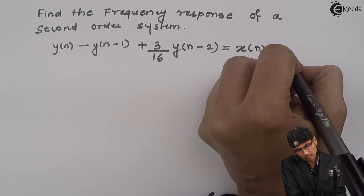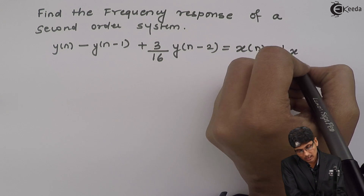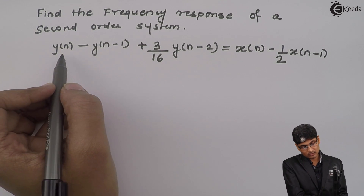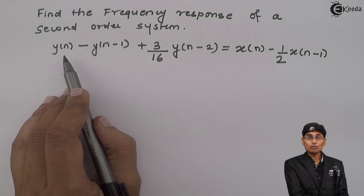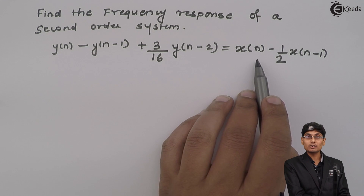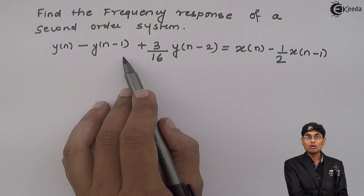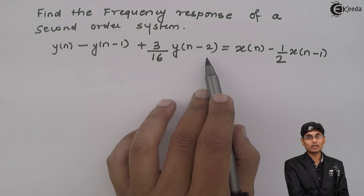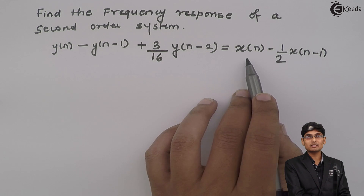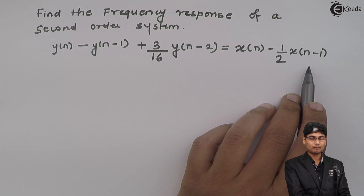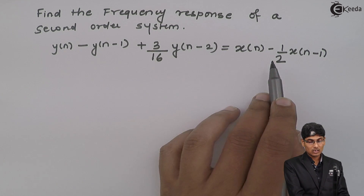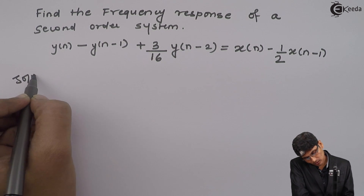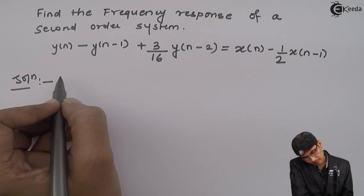...x(n-1). In this difference equation the output depends on past inputs and past outputs. We have two past outputs — one delayed by one and one delayed twice — and two inputs: one present and one past. The current output y(n) depends on both inputs and outputs.